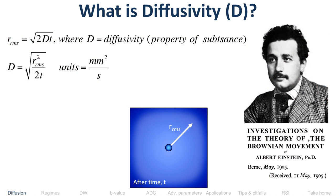Albert Einstein in 1905 — he was 25 years old — wrote four papers that year, each of which could have won him the Nobel Prize. One of them did win the Nobel Prize, but it wasn't the paper on Brownian movement, which is where he comes up with the formula for diffusivity so that you don't actually have to measure the motion a million times.